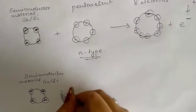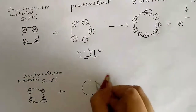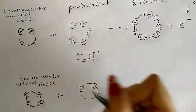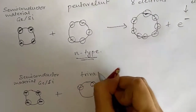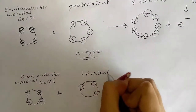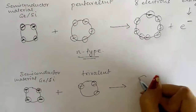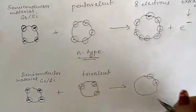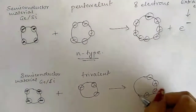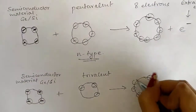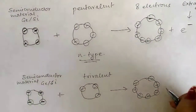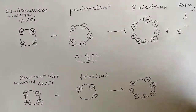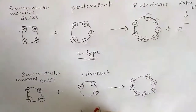When a trivalent impurity is added, the octet is not complete. It consists of only seven electrons — that is, it is deficient of one electron. Therefore, it gets a positive charge, and this material is known as p-type.